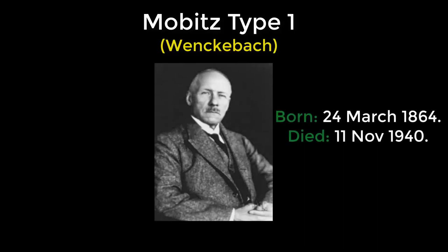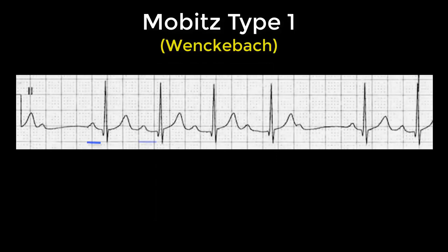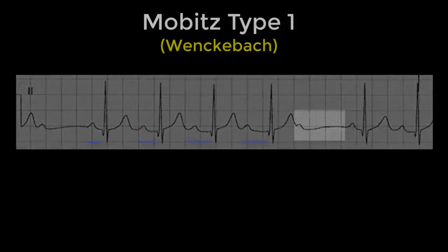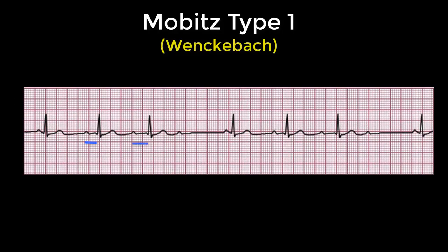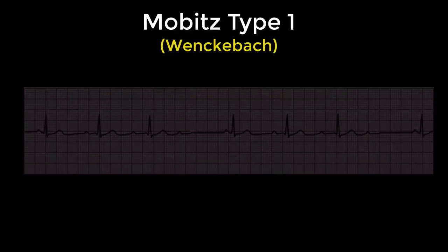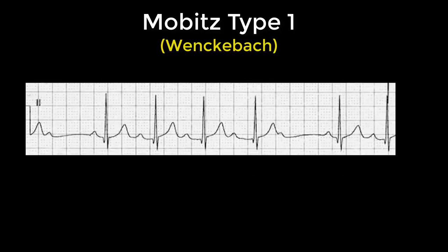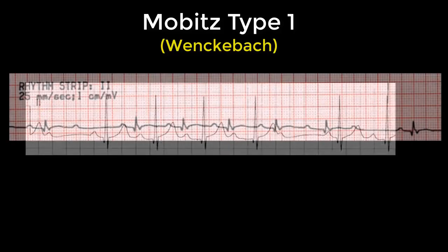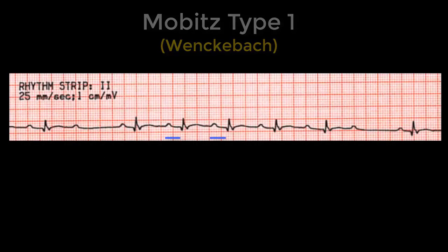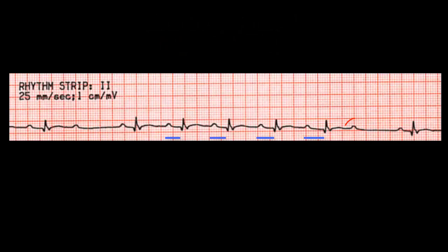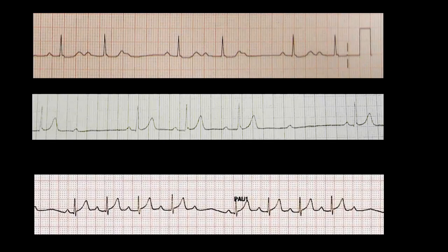In Wenckebach, the PR interval gradually prolongs until the point where the P wave doesn't initiate a QRS complex. Look here: stretch, stretch, non-conducted P. Again: stretch, stretch, non-conducted P. You might get stretch, stretch, stretch, non-conducted P — as we can see here — or even stretch, stretch, stretch, stretch, stretch, non-conducted P. All are Mobitz type one, also known as Wenckebach.